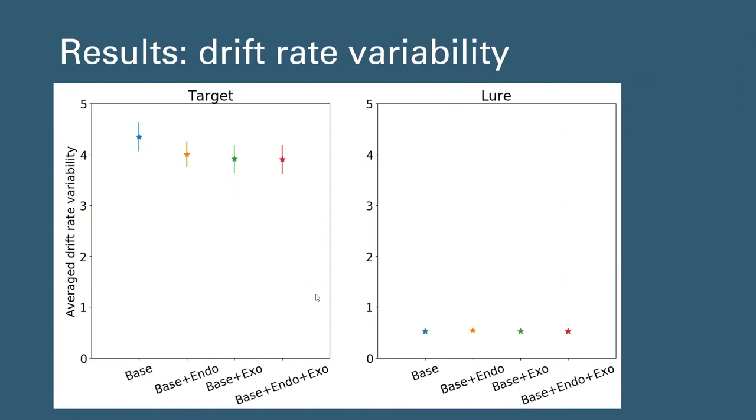Back to our main research question, we first found higher drift rate variability for target and lures, which is consistent with previous findings. We also see that with the included endogenous or exogenous factors, the estimated drift rate variability did start to drop for target drift rate. However, the amount of the decrease was not very large. This still suggests that the included systematic sources of evidence have accounted for cross-trial variability in the drift rate. And this also means that variability in drift rate assumed in the DDM is not purely random. We have shown that part of variability can be explained with variables that are psychologically interpretable and likely reflect cognitive processes underlying recognition memory performance.